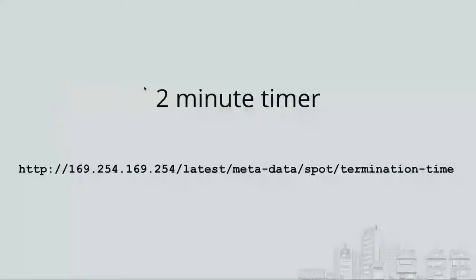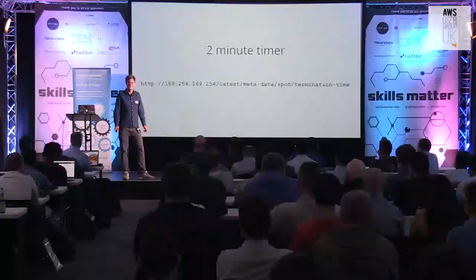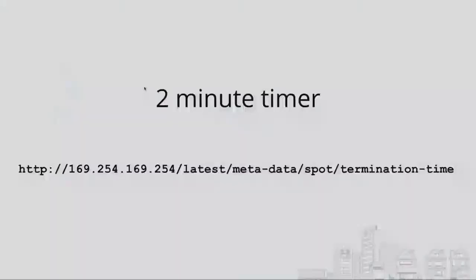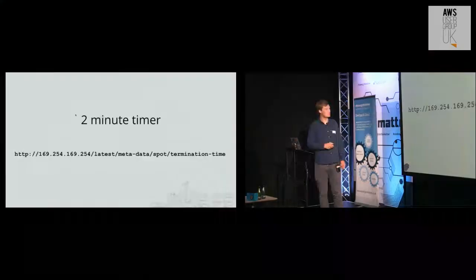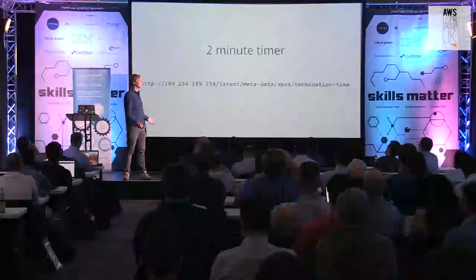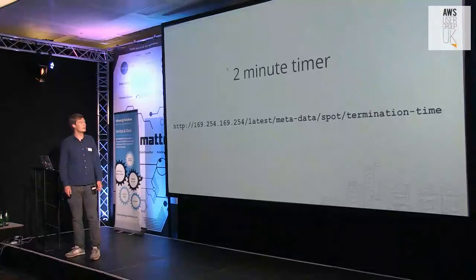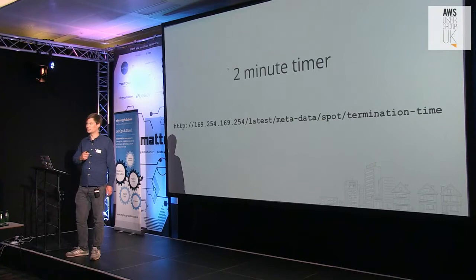I wanted to mention another major thing about spot instances. I've said that Amazon just terminates your instance, but it's not strictly true — you actually get some warning. You get two minutes. Some of you will be familiar with this magic IP address you can hit from any EC2 instance to get metadata. There is a specific endpoint available on spot instances that will tell you whether Amazon is about to reclaim your instance, but it'll only give you two minutes. If you're clever, you can watch this and use it to do something special. There's also a more modern option: they now support SNS, so you can trigger a Lambda function if you're into that.